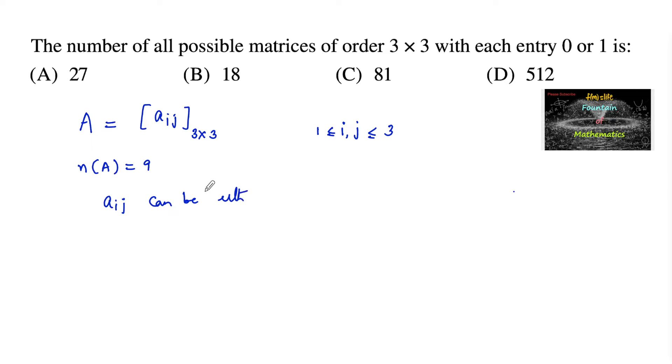So total 9 elements. We have the possibility for every element by fundamental principle of counting: a11, a12, a13, a21, a22, a23, a31, a32, and a33. So total 9 elements, each element having the possibility of either 0 or 1, 2 possibilities.